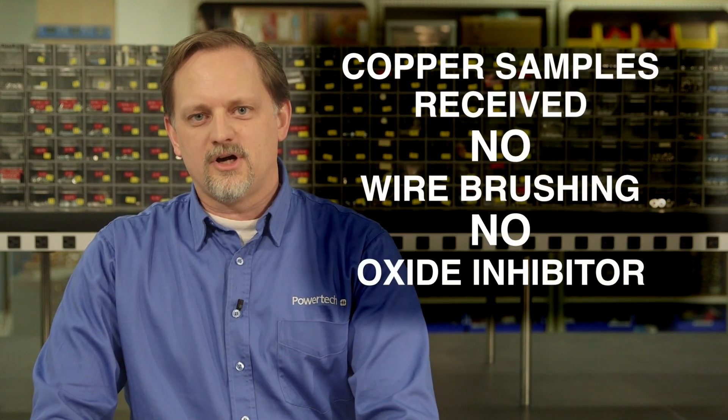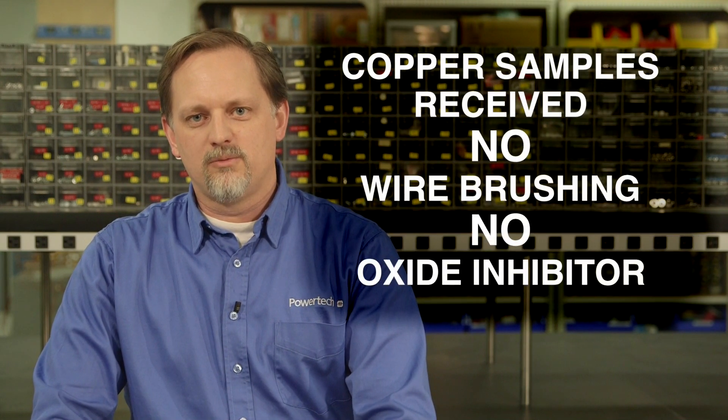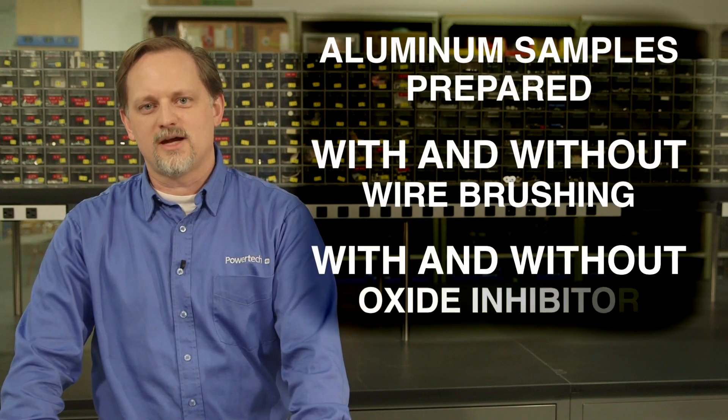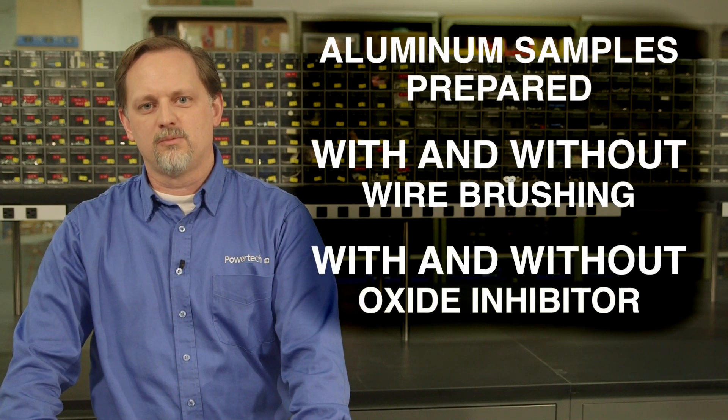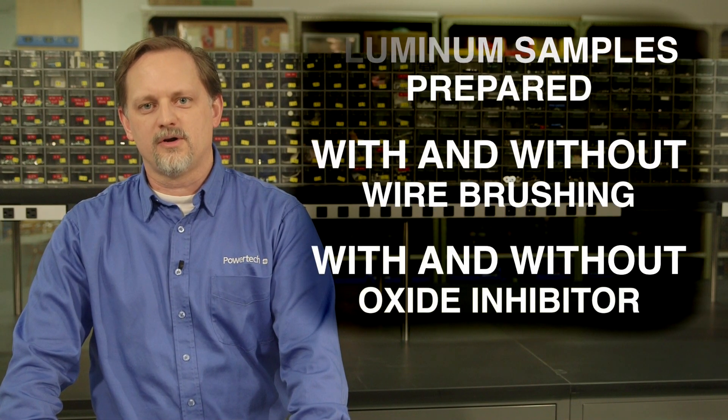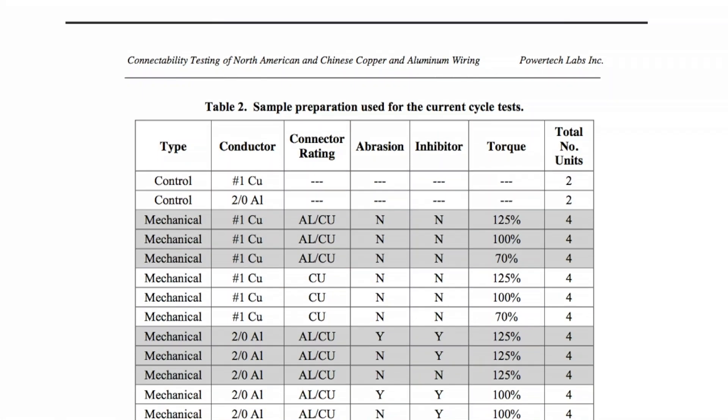Connectors were installed on copper wire samples with no wire brushing and no oxide inhibitor. Aluminum wire samples were installed with and without wire brushing, also with and without oxide inhibitor. This table shows a summary of the sample types and preparation methods.